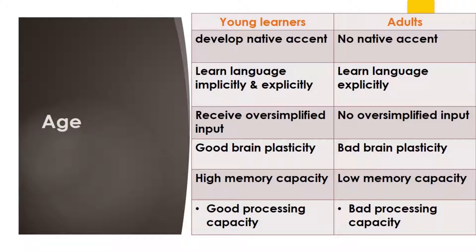Evidence has been presented that supports the fact that children can achieve native-like proficiency in a second language while adults find it difficult to acquire a native pronunciation. It was also pointed out by Decaser that young learners have the ability to learn language both implicitly and explicitly, while adults have lost their ability to learn language implicitly. One possible reason for such differences is that teachers and native speakers tend to use oversimplified input when interacting with children, while adults do not get that privilege.